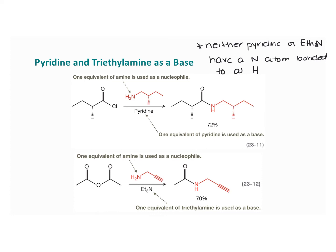The use of pyridine or triethylamine as a base is not limited to aminolysis. If you look back at alcoholysis or hydrolysis, HCl is effectively a byproduct. As that acid accumulates, the protonated form of the alcohol or water becomes more abundant, which slows down the reaction and compromises the yield. An excess of alcohol or water can be used, and people have also found that adding pyridine or triethylamine helps neutralize that acid. These are important considerations when designing a synthesis.